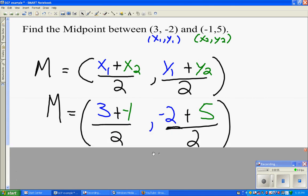I now substitute into my formula: (3 + (-1))/2, and (-2 + 5)/2.